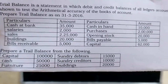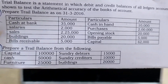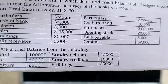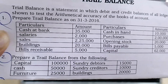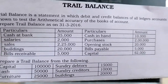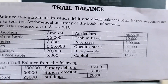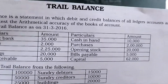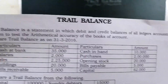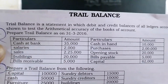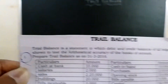Let us prepare the trial balance for problem one. The given items are: cash at bank 35,000; salaries 2,000; sales 2,25,000; building 20,000; bills receivable 5,000; cash in hand 10,000; purchases 2,00,000; opening stock 20,000; bills payable 5,000; capital 62,000.